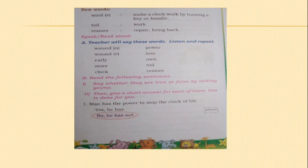Now I will read some words. Wound — the past tense of wind. Early — bega. More — jasthi. Clock — gadiyaara. Power — shakti. Lose — kaladukullu. Own — svantha. Toil — kastapattu, kerasamadu. Restore — marusthapisu, marali tharu.